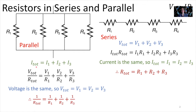From Ohm's law, V equals IR, so the current equals V over R. We can replace all instances of current with V over R. Our total current is then the total potential divided by our total resistance, and that equals the potential across each resistor divided by its resistance. Importantly, when we're in parallel, all elements receive the same voltage — the total voltage supplied is the same as what the battery provides.